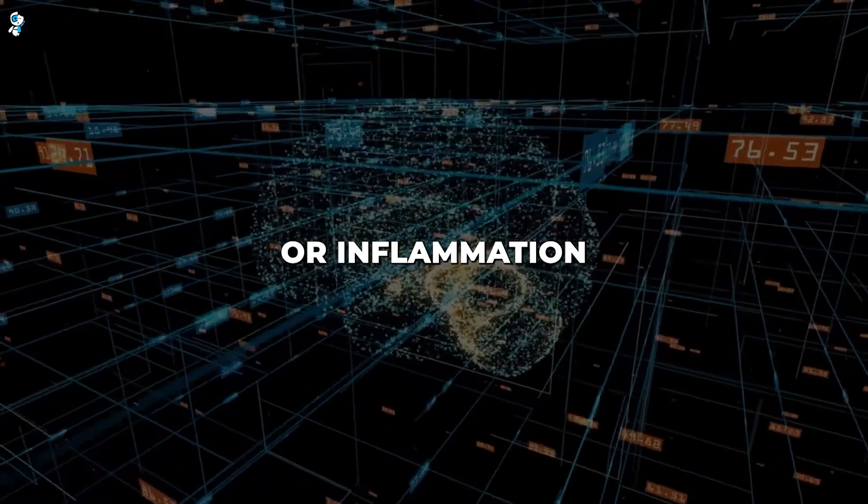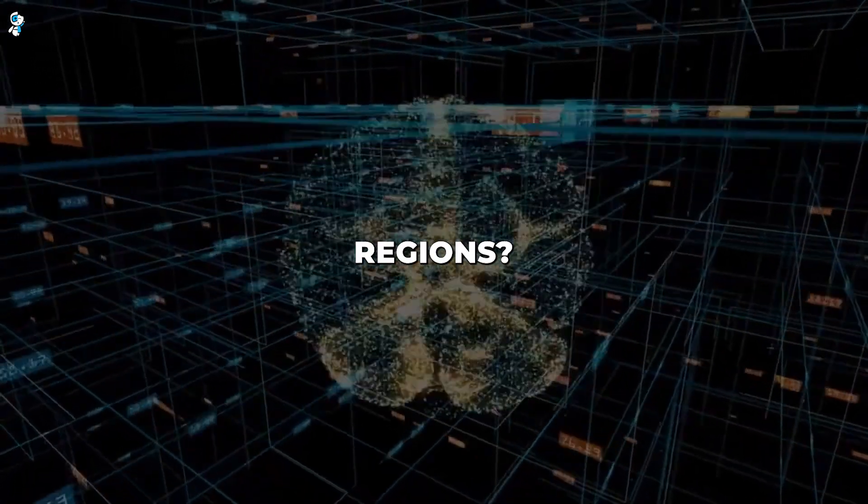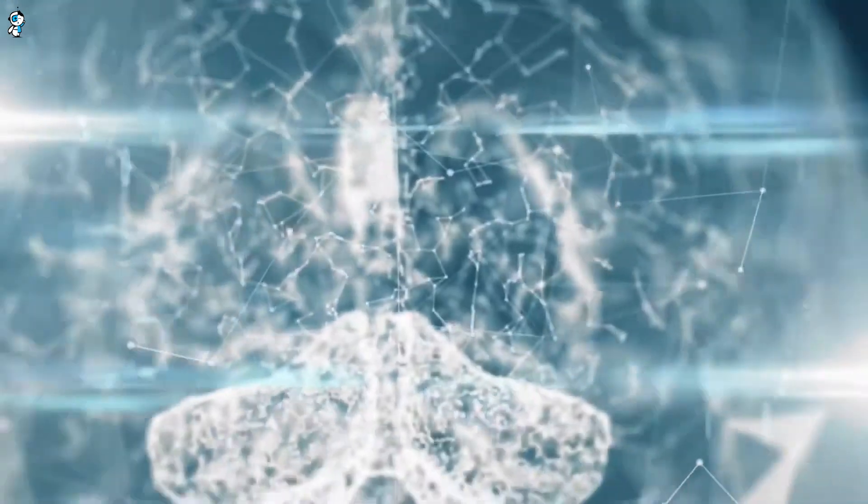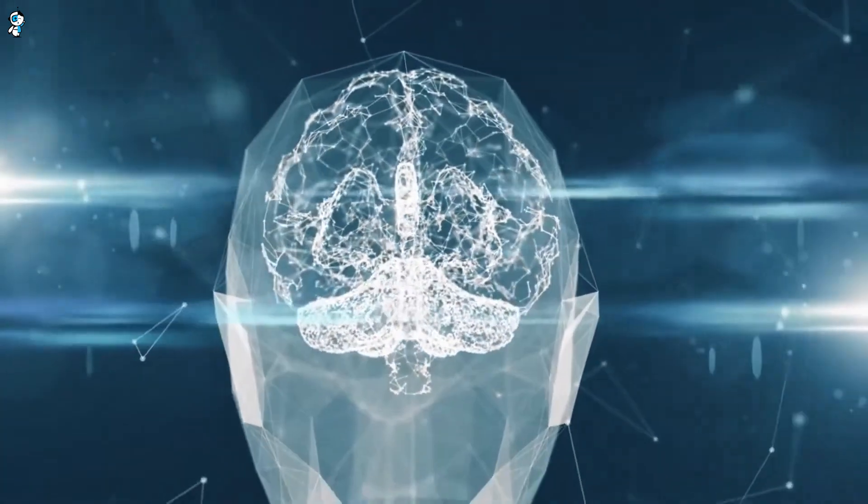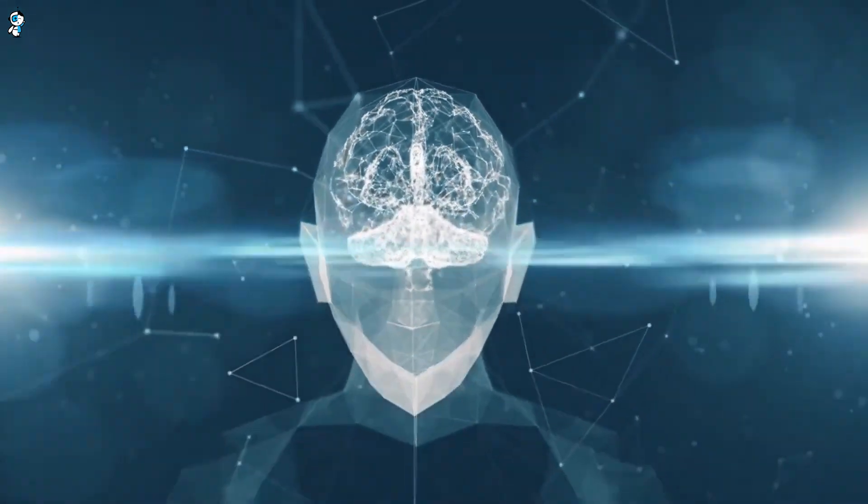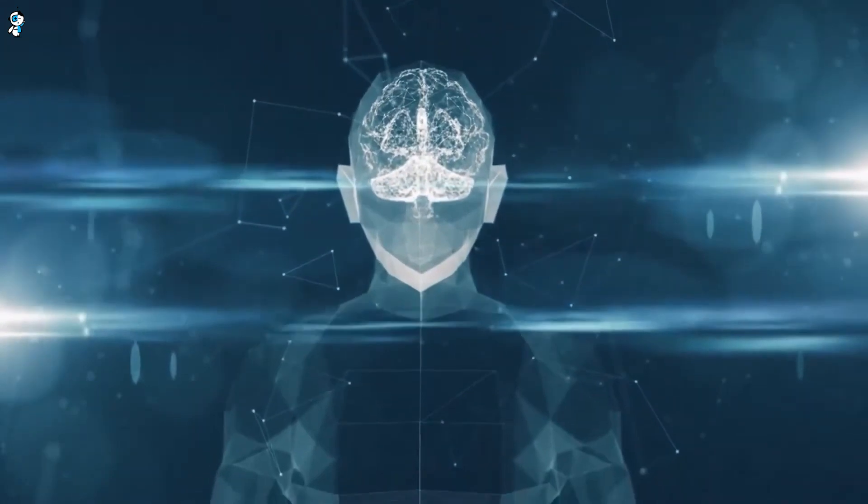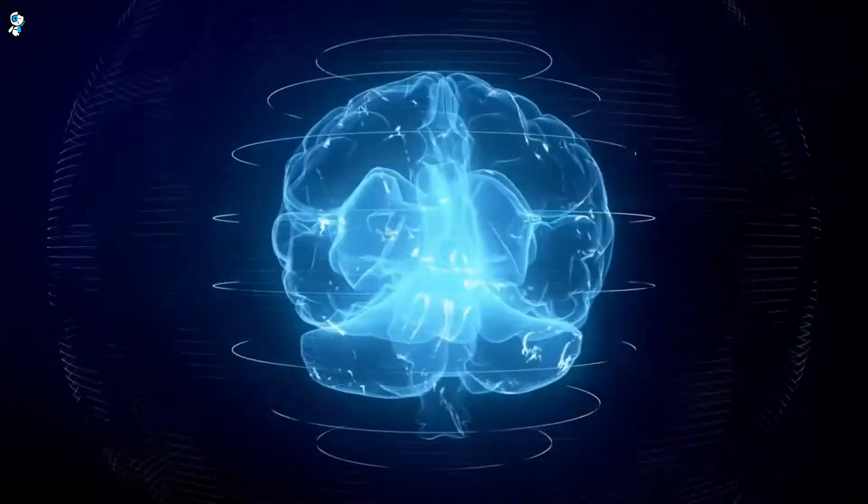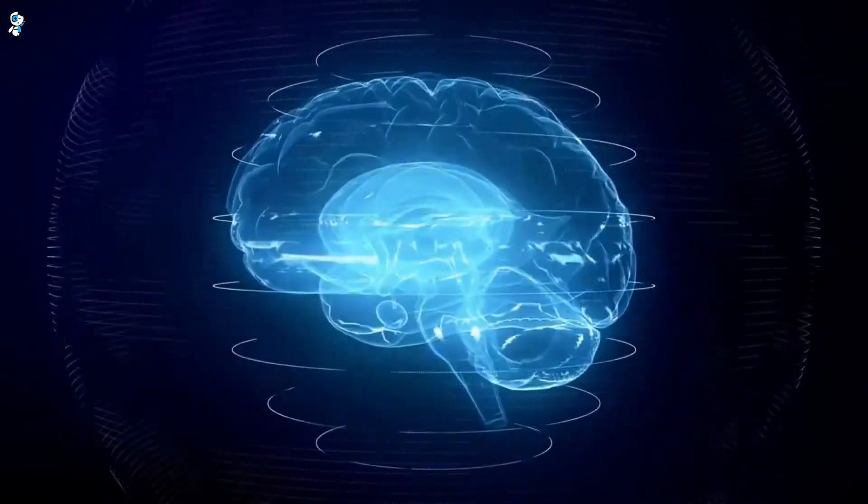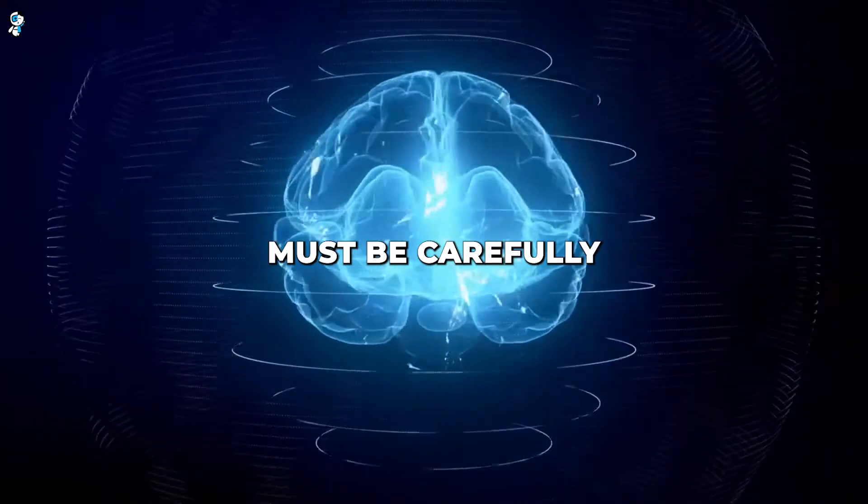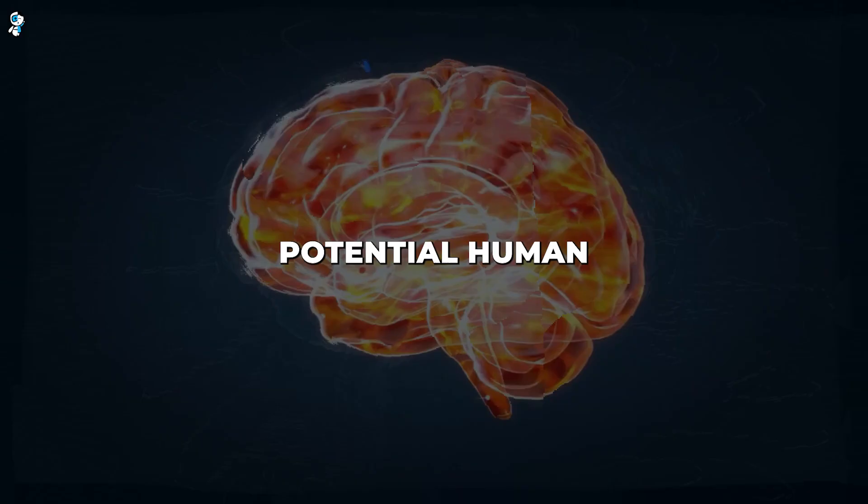There are also concerns about long-term risks from neural implants themselves. What unintended effects could arise years after implantation? Could scar tissue or inflammation damage brain regions? Might electrodes lose signal fidelity over time? Past brain implant attempts saw electrodes fail within months or years. The longevity of Neuralink's thin, flexible threads remains unproven. There is much still unknown about the brain's reaction to foreign devices over decades. These risks must be carefully weighed by any potential human test subject.